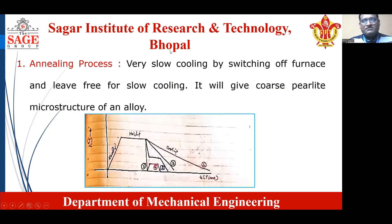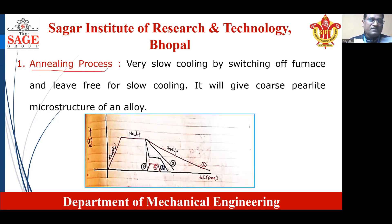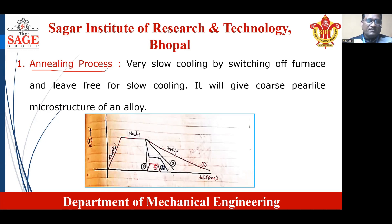The first process is known as annealing. In the earlier session we have discussed about the bulk heat treatment process. So the annealing process is a process under the bulk heat treatment process, because the bulk heat treatment process means the whole component or alloy is allowed for the heat treatment process. The bulk heat treatment process is an internal phenomenon. The first process is the annealing process, also known as full annealing process or conventional annealing process.